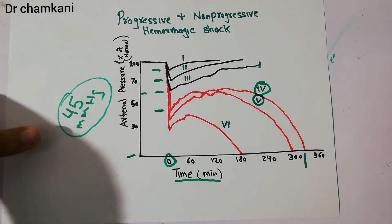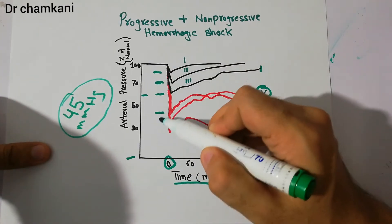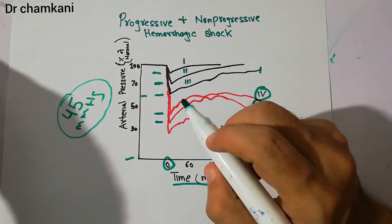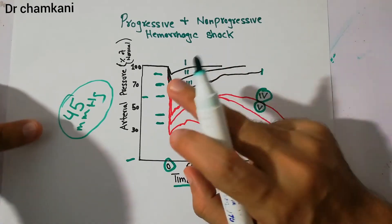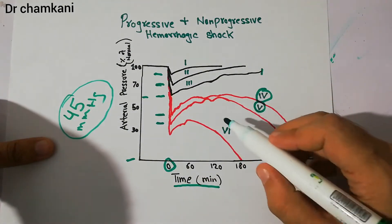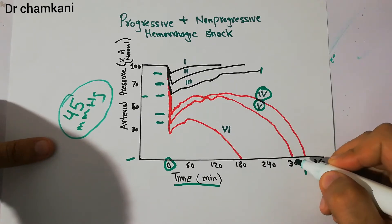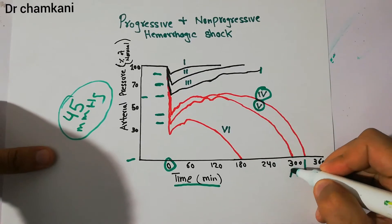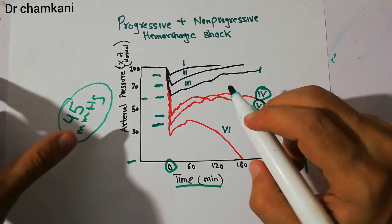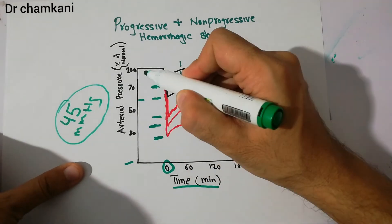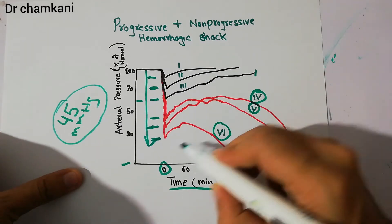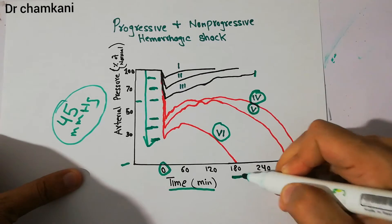The fifth group was bled even more than the fourth group, with arterial pressure falling below 45 mmHg at time zero. After bleeding was stopped, their body mechanisms could not recover them, and they died somewhat earlier than the fourth group — before the 300-minute mark. In the sixth group, the initial drop in arterial pressure was the highest of all groups, and when these animals were allowed to recover, they also died but very rapidly — within around 180 minutes.